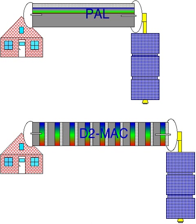MAC transmits luminance and chrominance data separately in time rather than separately in frequency as other analog television formats do, such as composite video.